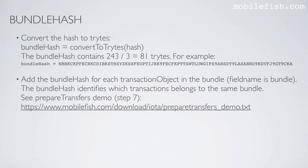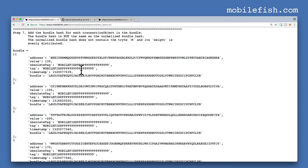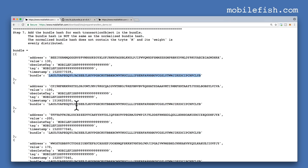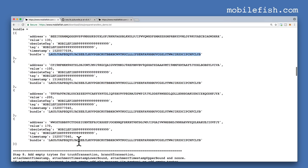Add the bundle hash for each transaction object in the bundle. The field name is 'bundle'. The bundle hash identifies which transactions belong to the same bundle. Use this link and go to step 7. Here is the bundle hash — this bundle hash is the same for transaction objects 0, 1, 2, and 3.